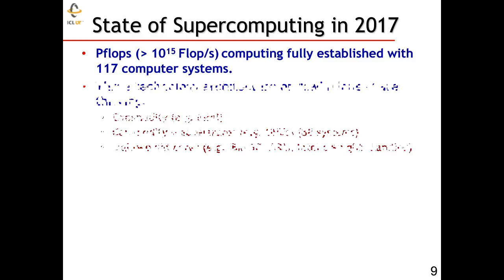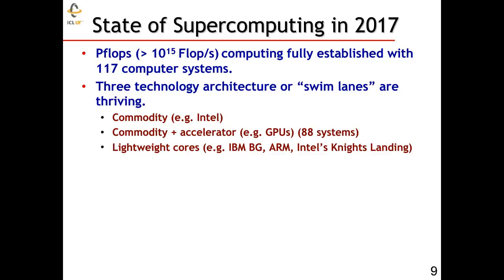There are really three technologies that we see evolving for high-performance computing. The first is taking commodity processors and putting them together in a box with a high-performance interconnect — we call that a supercomputer. A second way is augmenting commodity processors with an accelerator, like a general-purpose graphical processing unit or GPU. Today we have about 88 systems which use that mechanism. The third category is using very lightweight processor cores with simple structures to enable high-performance scientific computing.